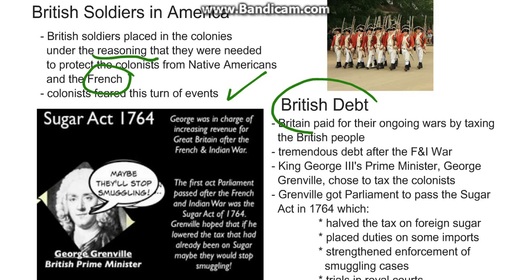The British had a huge debt from the French and Indian War. They typically paid for their wars by taxing the British people. King George appointed a prime minister named George Grenville to figure out how to pay off the British debt from the French and Indian War. George Grenville chose to tax the colonists to help pay for it.